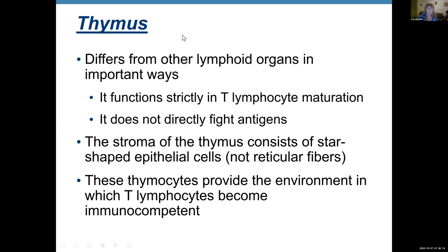The thymus is different from other lymphoid tissue in several important ways. First, it does not directly fight antigens — unlike lymph nodes and the spleen, which have macrophages that directly fight antigens. The thymus strictly functions in T lymphocyte maturation. T lymphocytes are formed in bone marrow, then move to the thymus — which is where the 'T' name comes from — where they mature. Then they move to lymph nodes where they become immunocompetent.